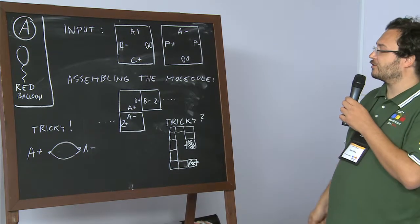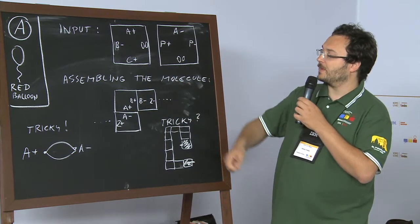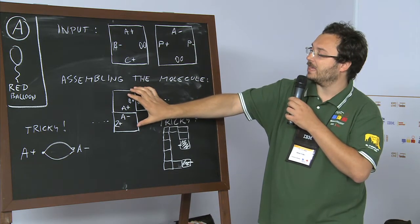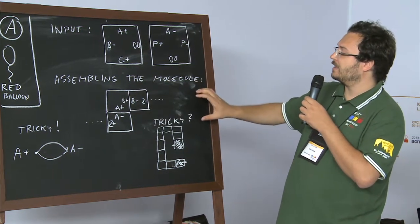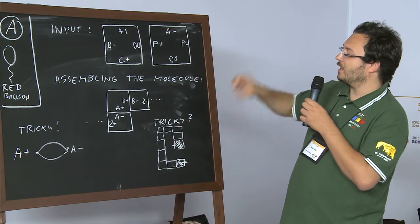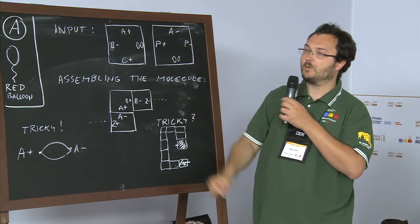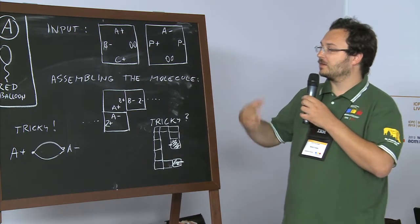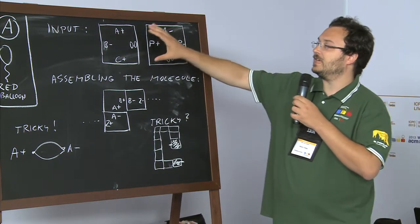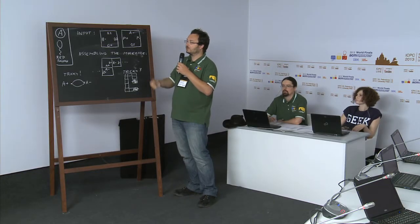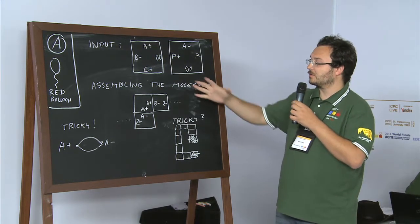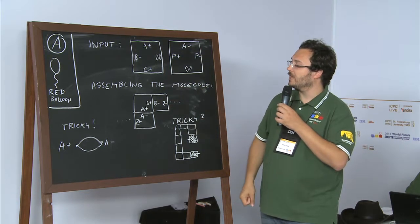Sometimes when you are assembling these structures, cases like this one may occur: you have Z-minus here and Z-plus here, so you could take this entire piece and add another piece just like it, with Z-minus matching the Z-plus, and so on. In this way, these kinds of molecules could be assembled into an unbounded, potentially infinite structure. The question asks: given these exact molecule types, is it possible to assemble such a possibly infinite structure, or does every structure have to be finite?